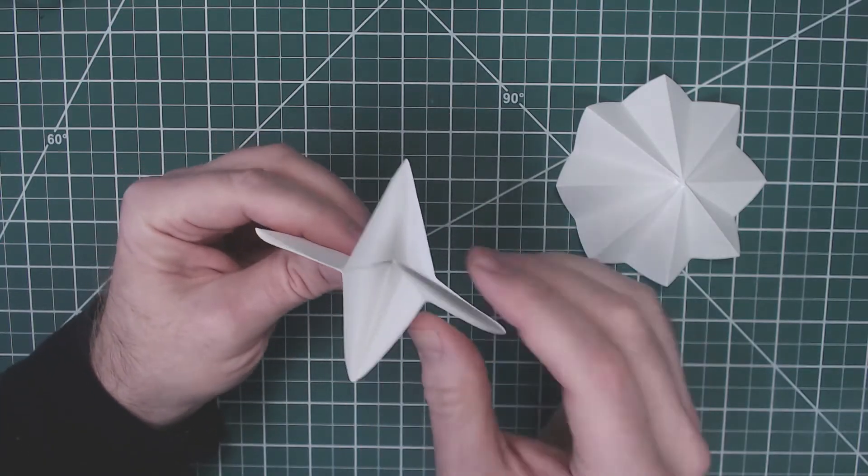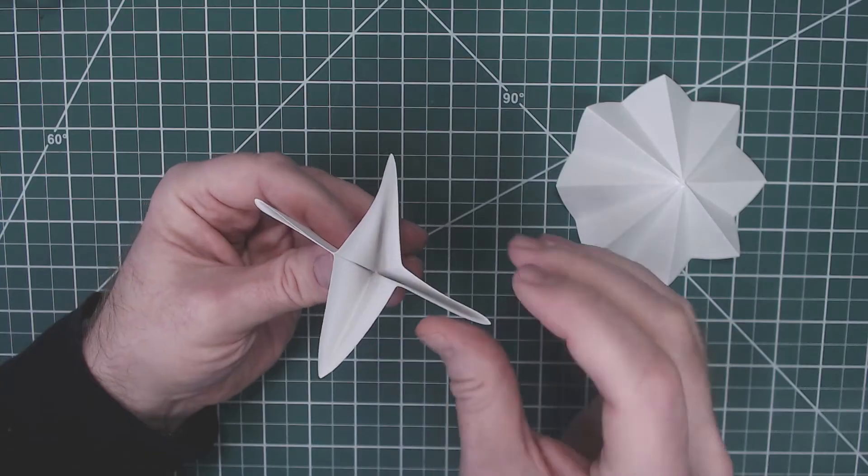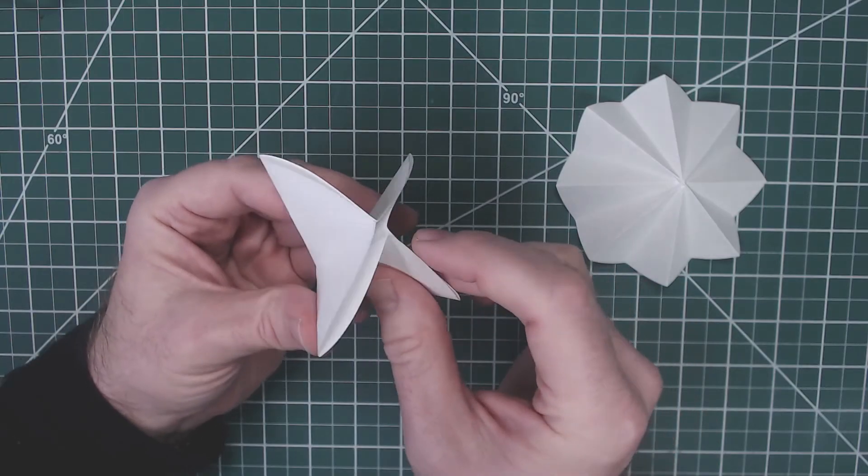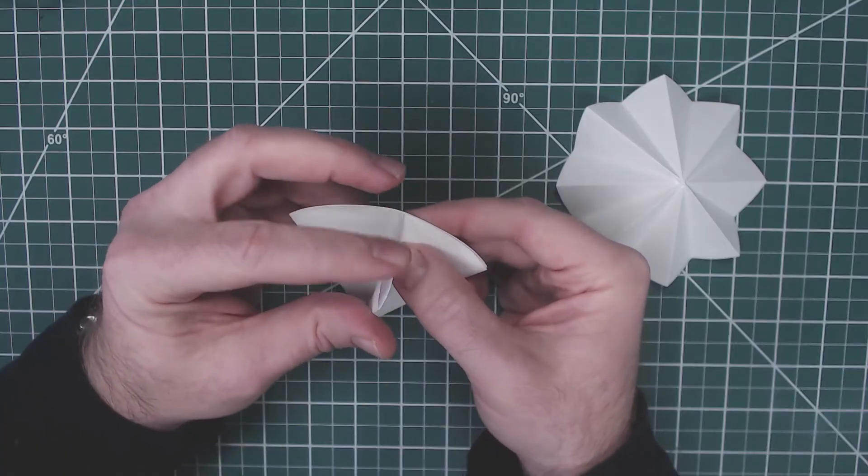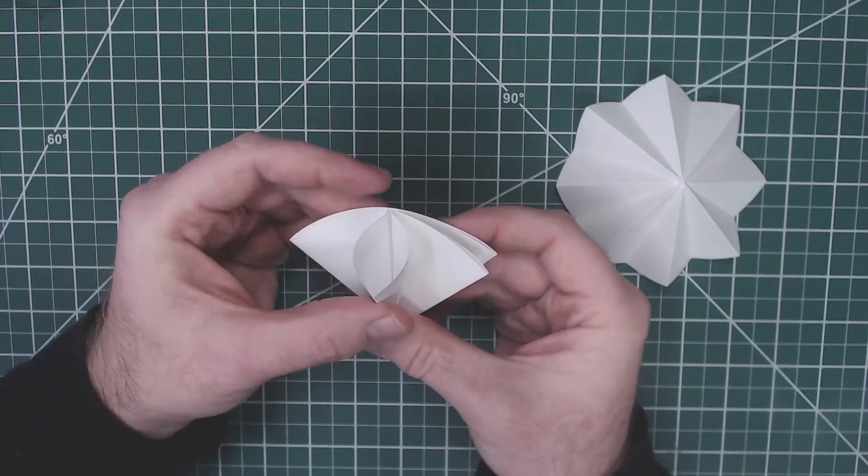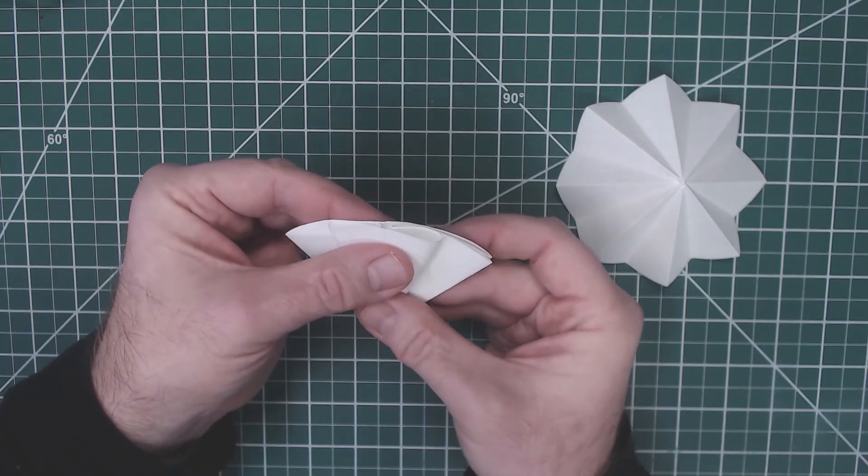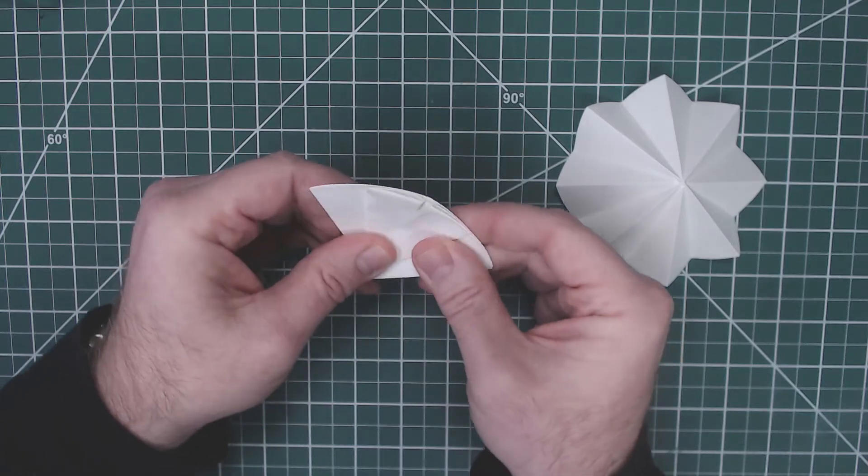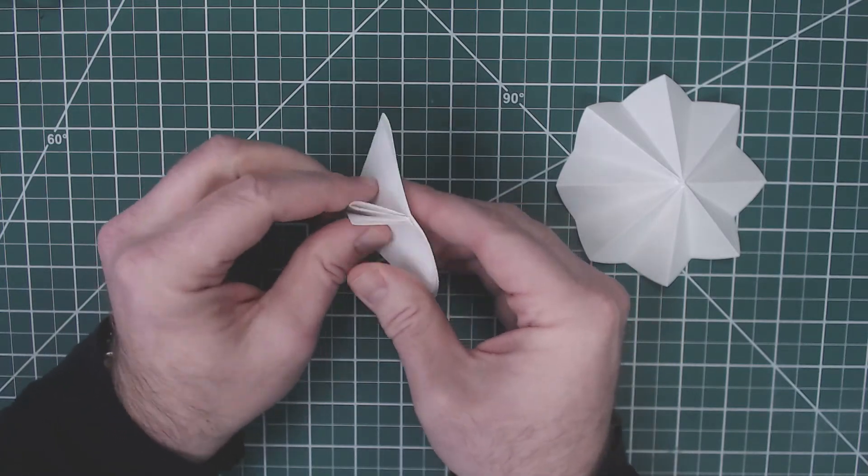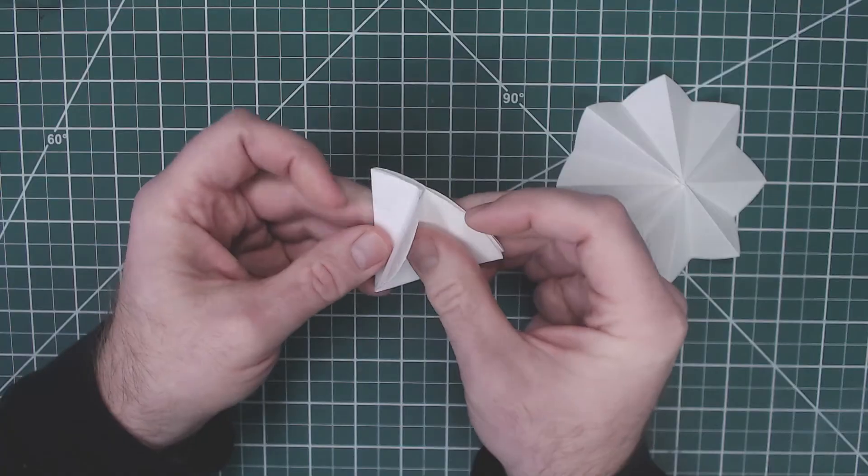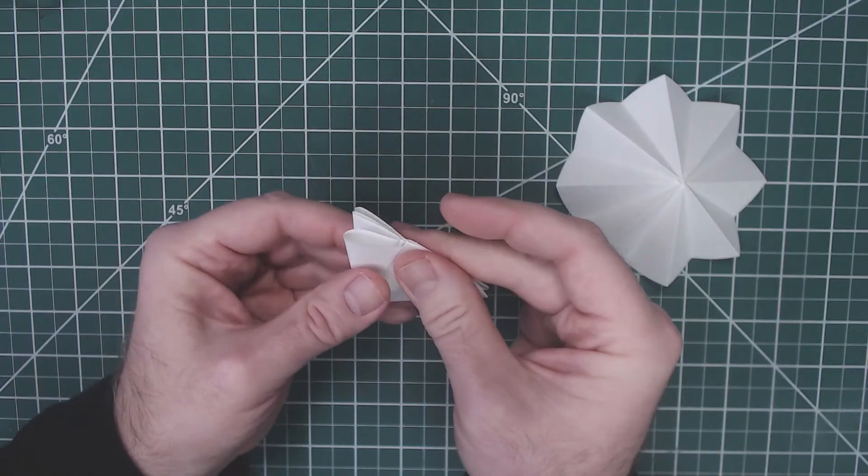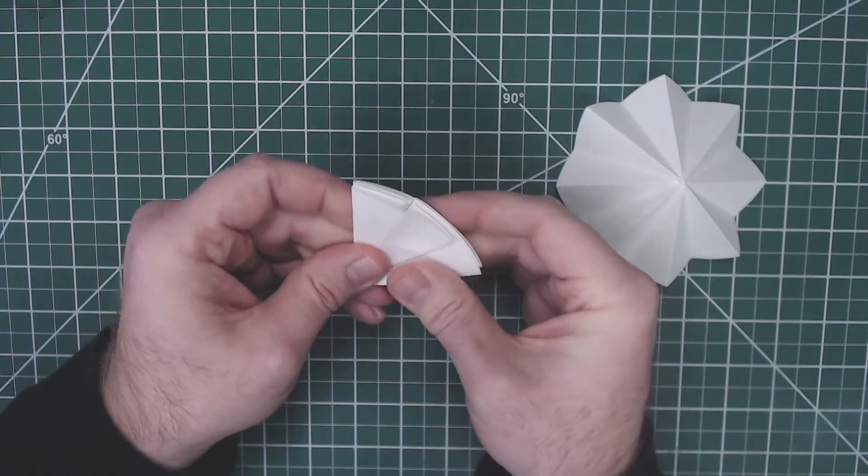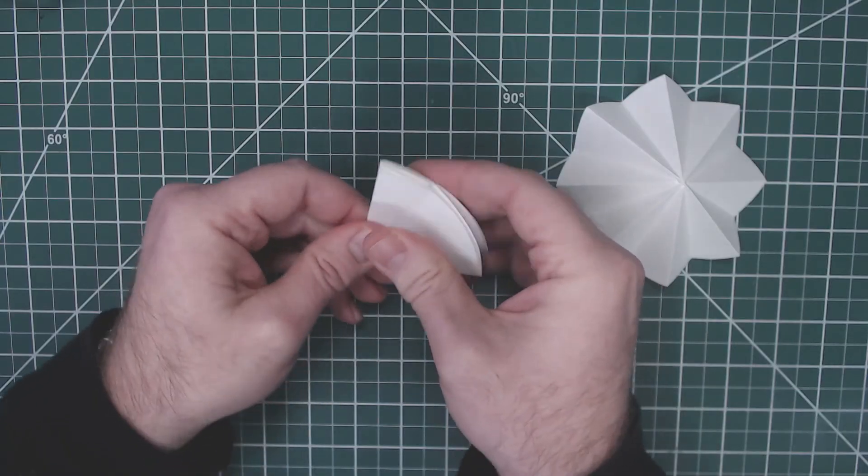Next we're going to take each of these and push them in and fold them again. Take that edge, push it in, fold it, and then fold that back. You'll do that three more times and fold that back.